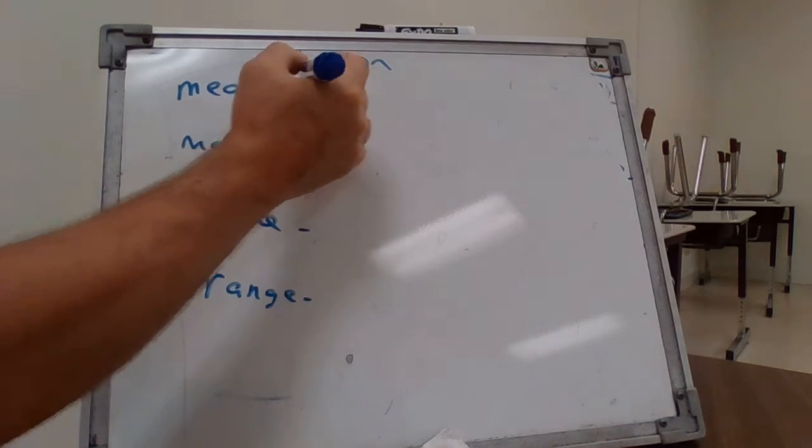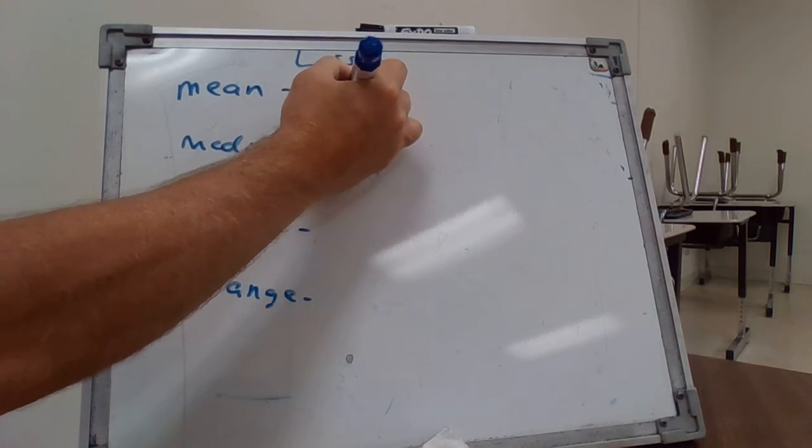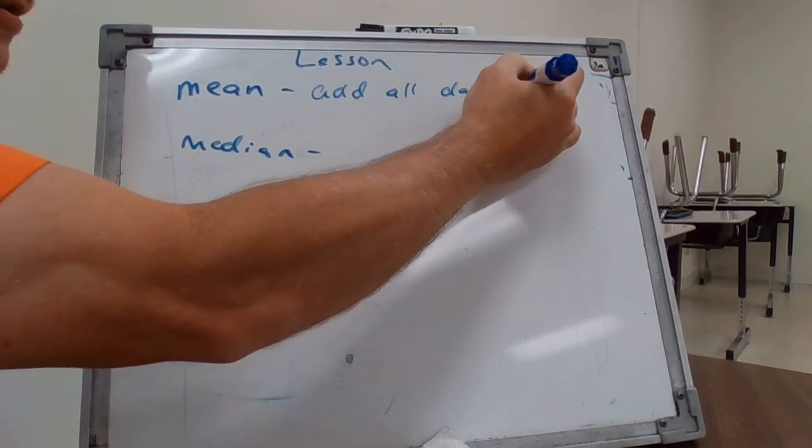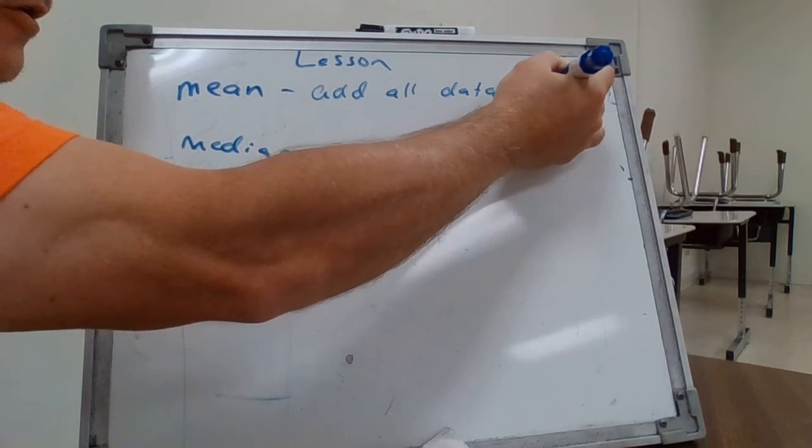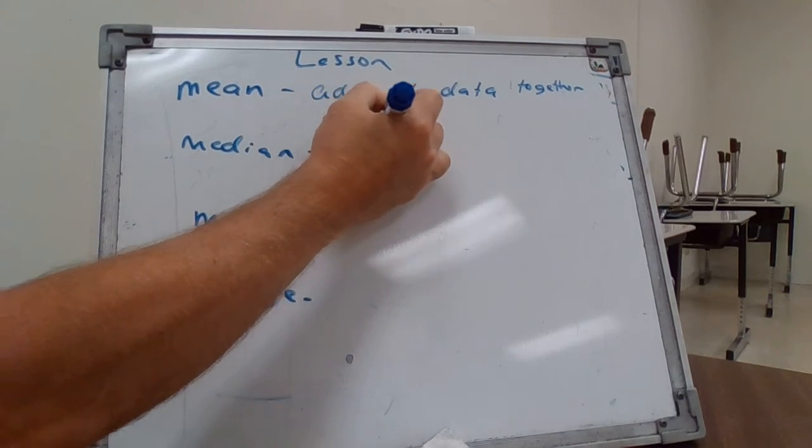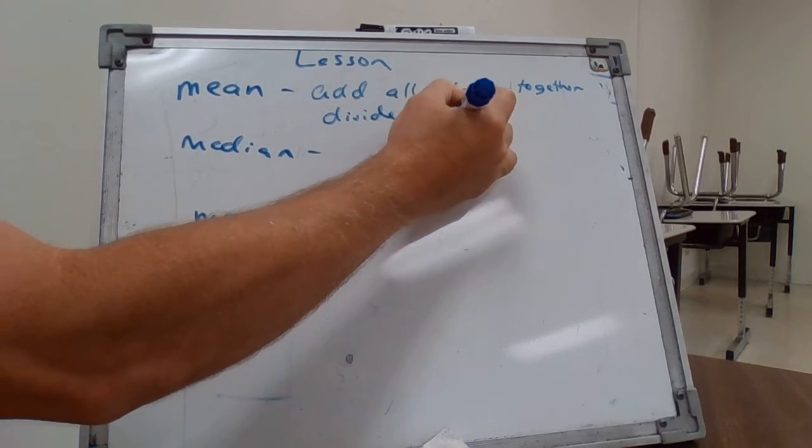Okay, so the mean is you add all data together numerically, divide by number of addends.